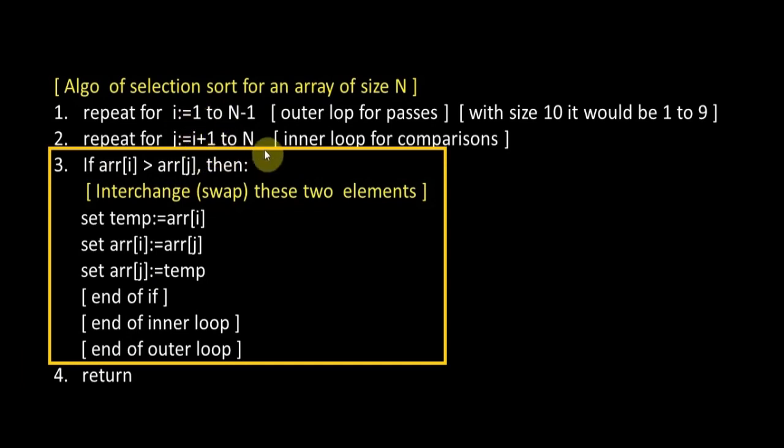So arr[1] will be compared with arr[3], next time arr[1] with arr[4], arr[5], and so on. When the inner loop is terminated, it will go to the beginning of the outer loop.